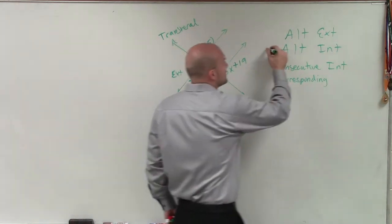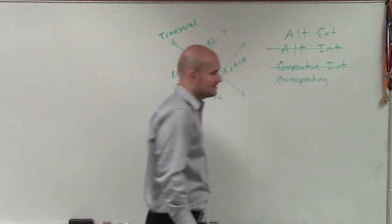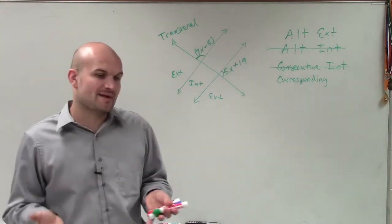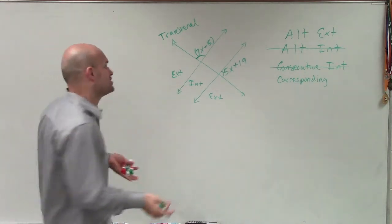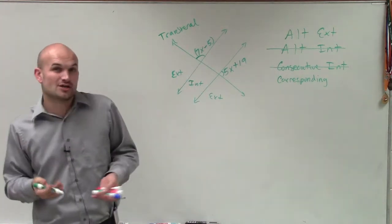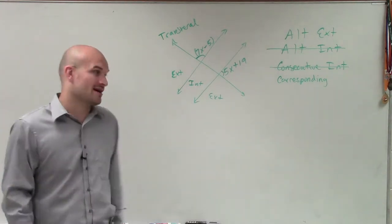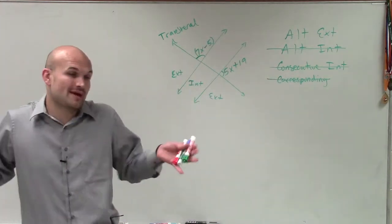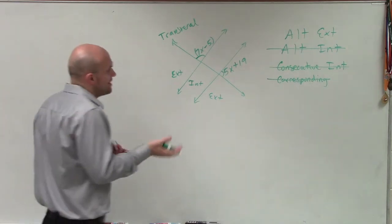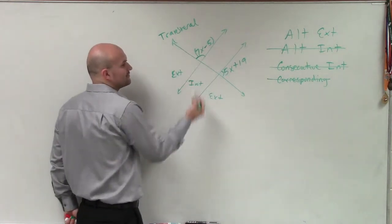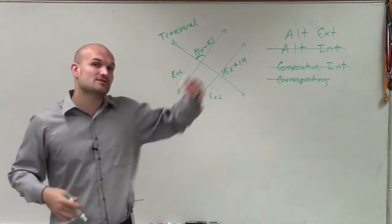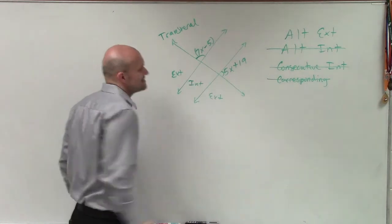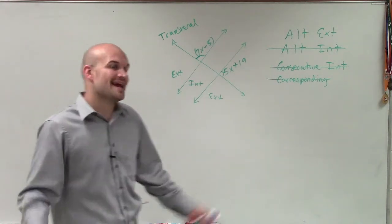Obviously, these cannot be alternate interior angles or consecutive interior angles. Then we look at corresponding — corresponding means angles are in the exact same position at their intersection, and corresponding angles have one interior and one exterior angle. So corresponding is not going to work. Next, alternate exterior: we have exterior angles, but alternate means on alternate sides of the transversal — if one is above, the other is below; if one is to the left, the other is to the right. Since these are on the same side, we don't have alternate exterior angles either.